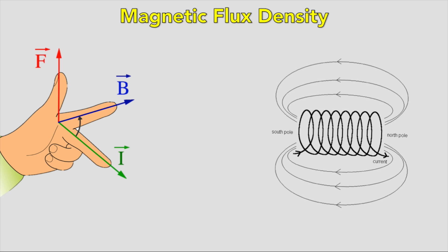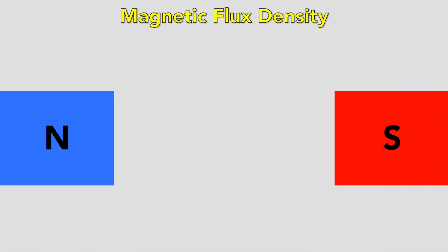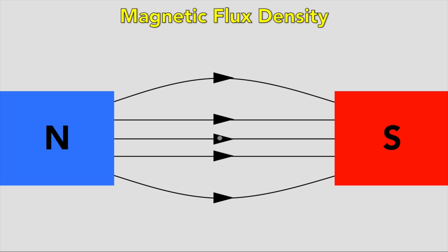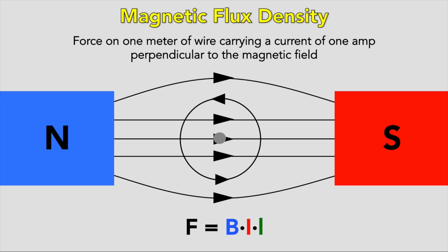The force on a current-carrying wire at right angles to a magnetic field is proportional to the strength of the magnetic field. The magnetic field strength, or magnetic flux density B, is defined as the force on one metre of wire carrying a current of one amp perpendicular to the magnetic field. B is measured in Teslas. The size of the force on a wire of length L in the field, with magnetic field strength B, is given by F = BIL, where I is the current and L is the length.